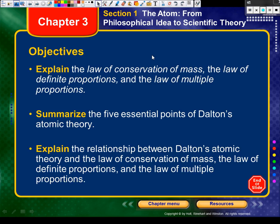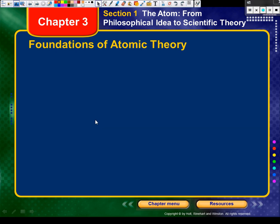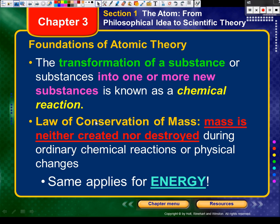The first thing we're going to talk about in section one is the law of conservation of mass, the law of definite proportions, and the law of multiple proportions. Then we're going to talk about the five points of Dalton's atomic theory. So the first thing: the transformation of a substance.